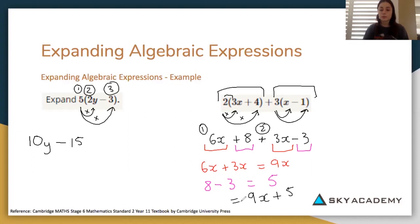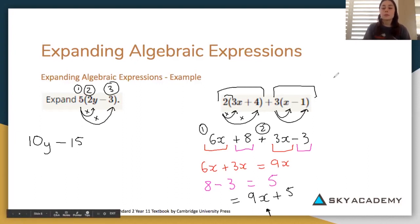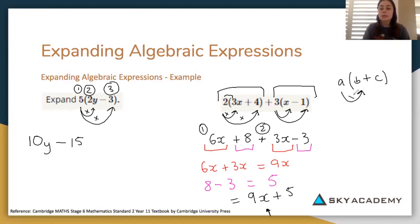Putting those together we have nine x plus five. Remember: always once you've expanded your algebraic expression, simplify if possible. We can't go further here because we don't know what x represents, so we leave it as nine x plus five. When expanding algebraic expressions, just do the first number times the second — a times b — and then the first number times the third.